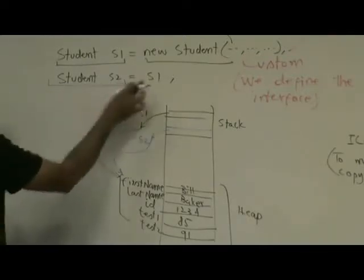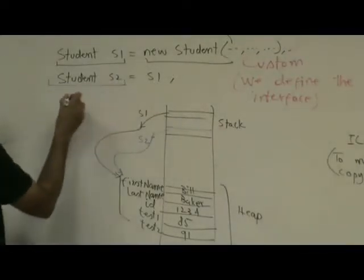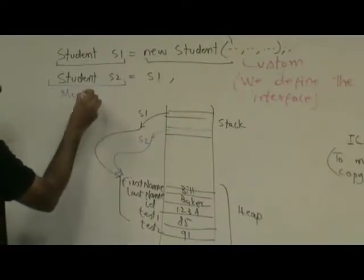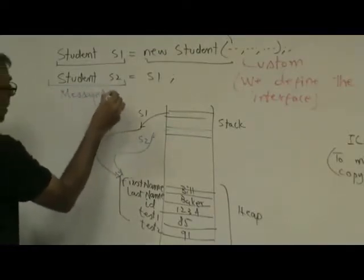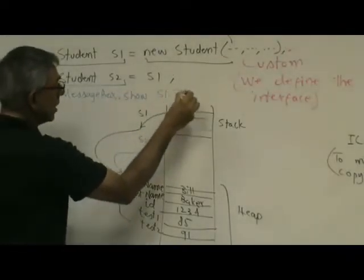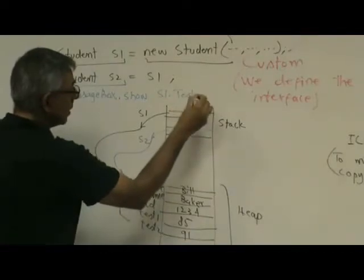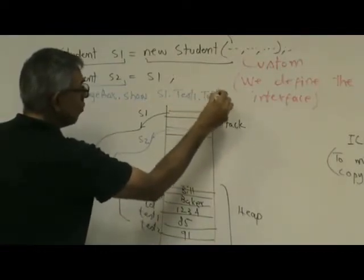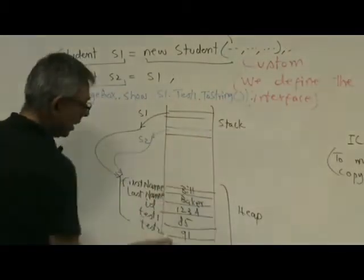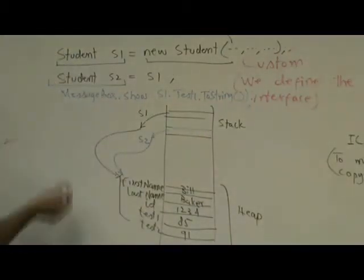So for example, after we assign s2 to s1, if you did, let's say messagebox.show, let's say s1.test1.toString, what will you see in this example? 85. You'll see 85, right?